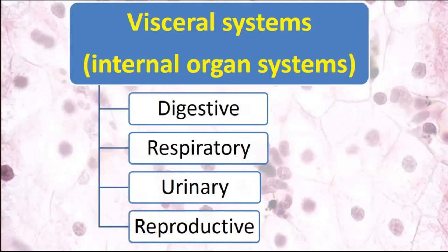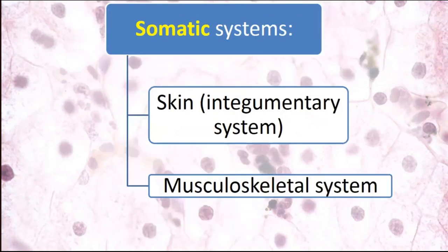First, we have visceral systems — systems of internal organs including digestive, respiratory, urinary, and reproductive systems. They form the viscera, which you studied in anatomy, providing vital functions and support for the entire organism. Also there are somatic systems. Soma means body, so they form our body. These include the musculoskeletal system: muscles, articulations, bones, cartilage, ligaments, tendons, etc. And also the skin or integumentary system, which covers our body.